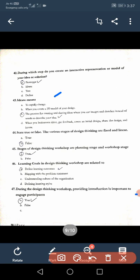Forty-third: Ideate means the process of creating, sharing ideas where you imagine and sketch instead of words describe your ideas, 43C. Forty-fourth: State true or false, the various stages of design thinking are fixed and linear? False, B. Forty-fifth: Stages of design thinking workshop are planning stage and workshop stage? Yes, true. Forty-sixth: Learning goals in the design thinking workshop is related to defined learning outcomes, A.